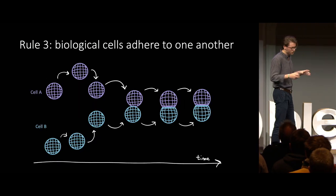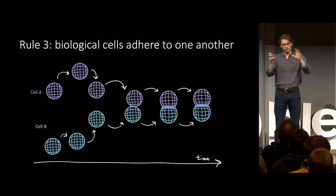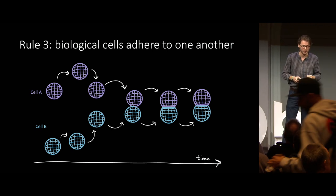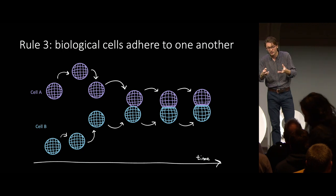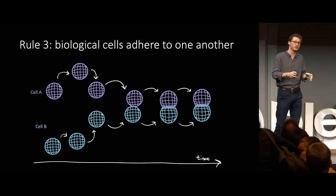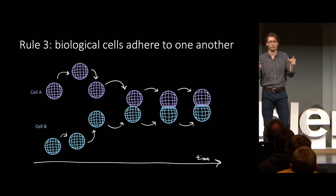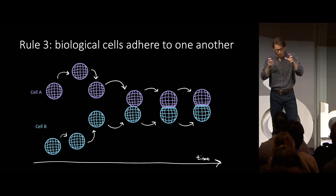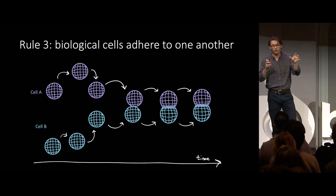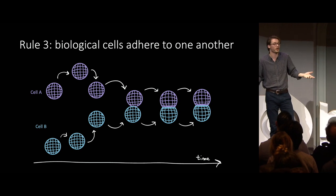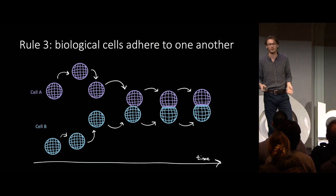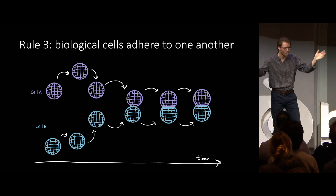Say you have two distinct cells moving randomly in their environment. At some point they will get close to each other and collide. Thanks to cell-cell adhesion, those two cells will stick together — they adhere to one another. This is a strategy or rule that is super important to development, because otherwise life would just fall apart. Tissues would not stick together, and we probably wouldn't look like humans.